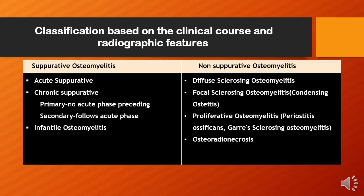Coming to the classification based on clinical codes and radiographic features, osteomyelitis is divided into suppurative and non-suppurative osteomyelitis. Suppurative includes acute suppurative, chronic suppurative, and primary and secondary osteomyelitis, as well as infantile osteomyelitis. Non-suppurative includes diffuse sclerosing osteomyelitis, focal sclerosing osteomyelitis — also known as condensing osteomyelitis — and proliferative periostitis, also known as periostitis ossificans, and Garré's sclerosing osteomyelitis, and finally osteoradionecrosis.